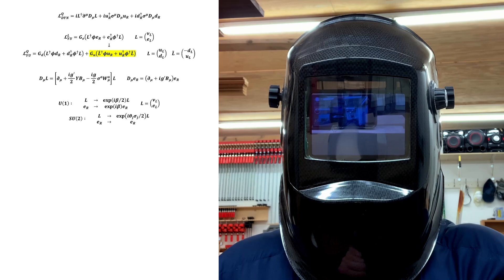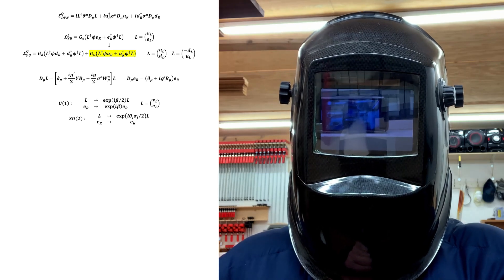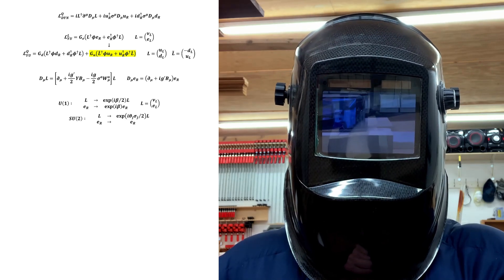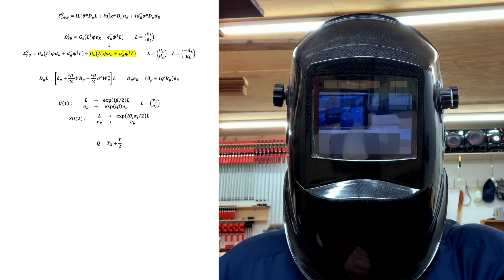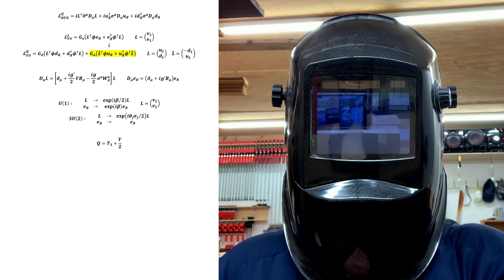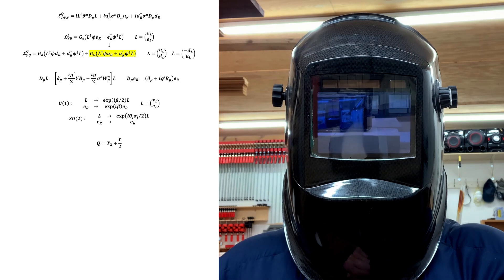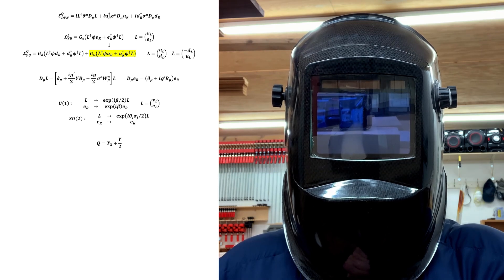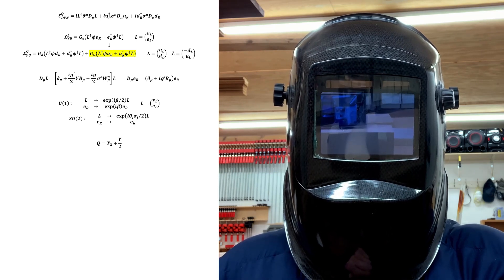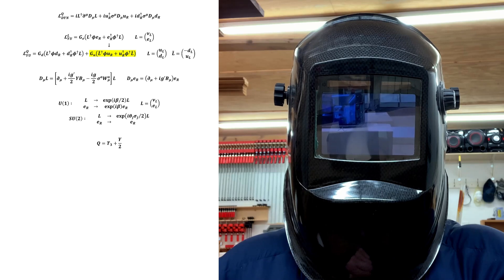I did this by reading the gauge transformation laws for the leptons from the covariant derivatives, and then using them to see what Q charges the lepton fields carried based on how they transformed under Q transformations. Here, we'll do the reverse to figure out what the coefficients need to be changed to for the desired charge assignments to be generated.